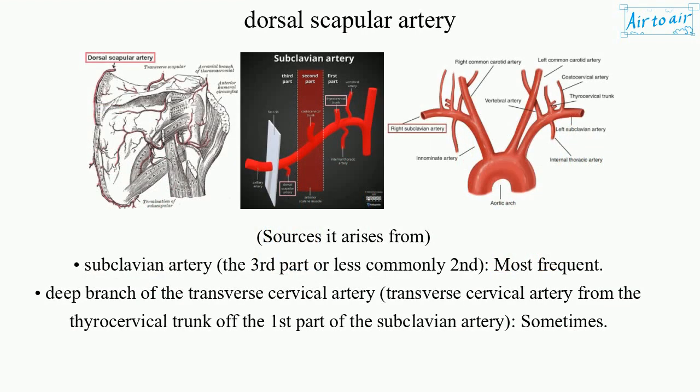Sources: It arises from the subclavian artery, the third part or less commonly the second part, most frequently as the deep branch of the transverse cervical artery, which arises from the thyrocervical trunk off the first part of the subclavian artery.